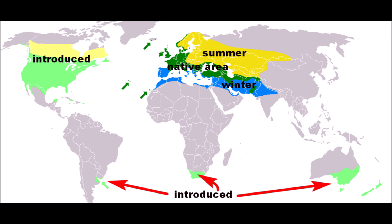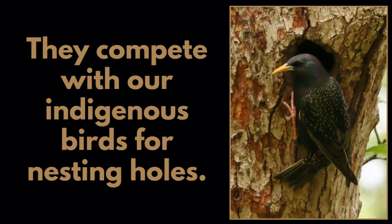On the distribution map, dark green is their native area, yellow is where they spend summer, blue is where they spend winter in warmer regions, and light yellow and light green show where they were introduced worldwide. Unfortunately, common starlings compete with our indigenous birds for nesting holes and have spread across most of Southern Africa.